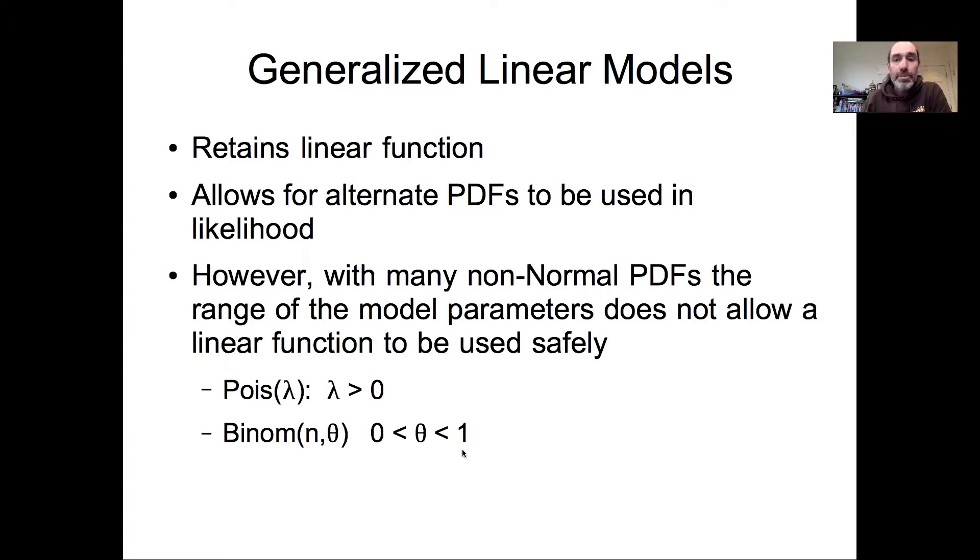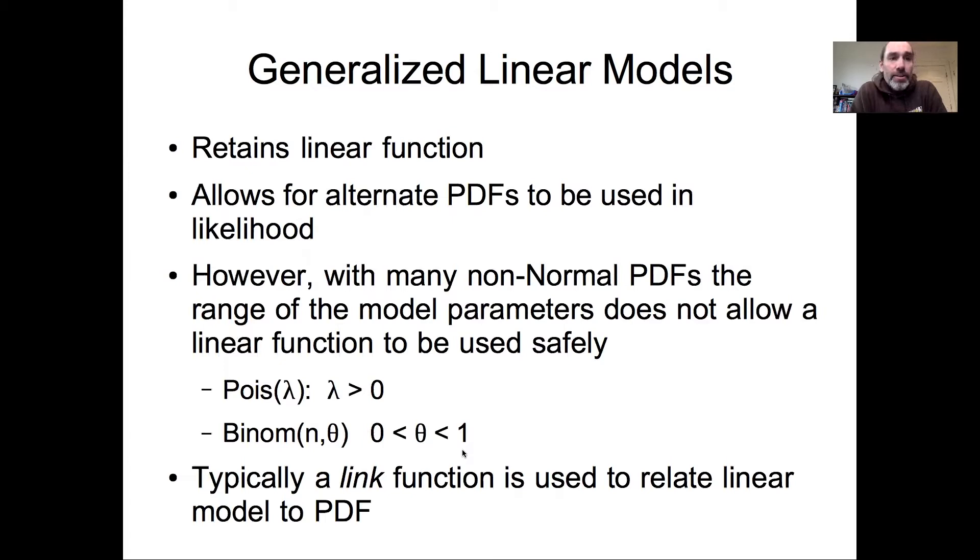There are multiple ways that could be addressed, but the standard one in generalized linear models is what's called a link function. A link function is a function used to translate our linear model to the domain of the probability distribution. Worth noting, the link function should be thought of as part of your process model. It turns your process model in almost all cases into what is actually a nonlinear model.